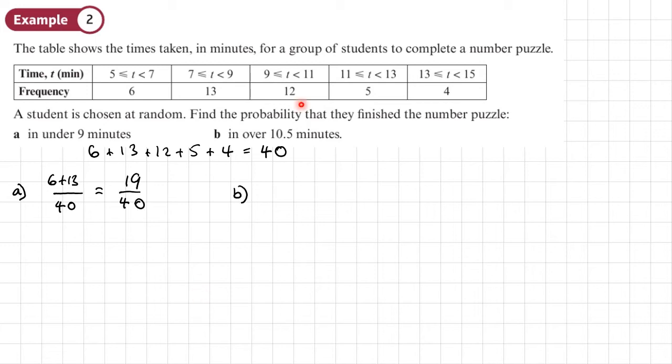Okay, part b: in over 10.5 minutes. That's some of this plus 5 plus 4, so we're going to work out what this part is, and we're going to use the interpolation which we used in a previous chapter. So to do that, we start by drawing our little diagram like this.